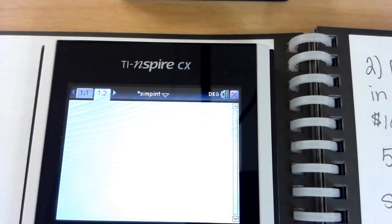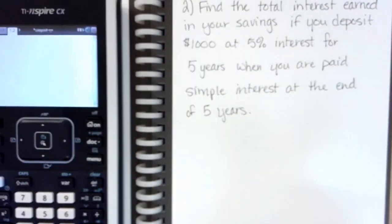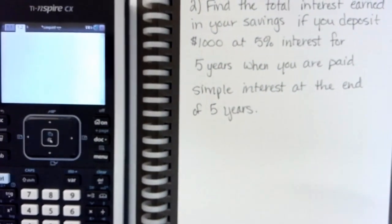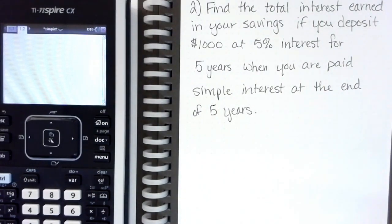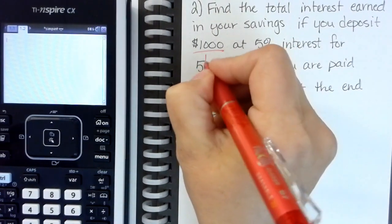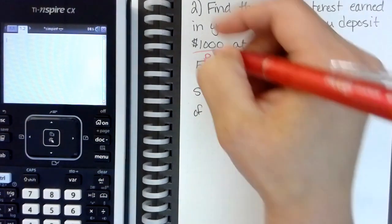Now we're going to look at our problem, so we need to find out the principle, the rate, and the amount of time that this is being paid on. So our principle is we're depositing a thousand dollars, that's our principle.